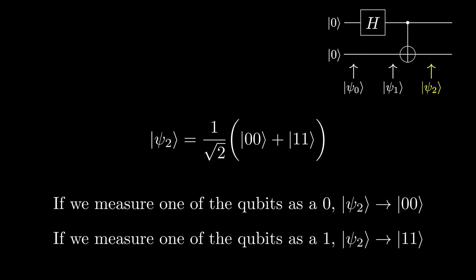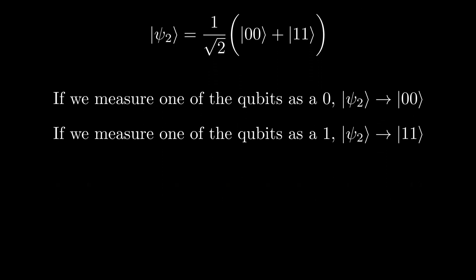So, without even looking at both the qubits, by measuring one of them, we immediately know the state of the other qubit. This is called entanglement.